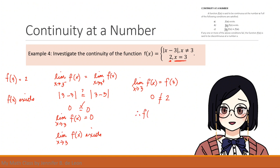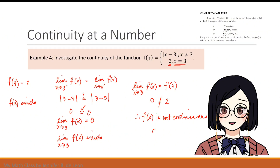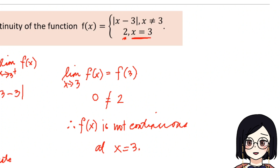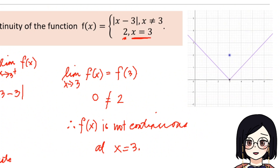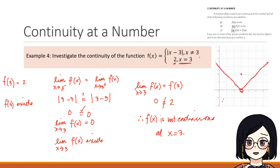We conclude that f(x) is not continuous at x = 3. We verify our answer by analyzing the graph. In the graph of |x - 3| where x ≠ 3, there is a hole at x = 3, so we have to lift our pen to trace each part of the graph. To trace the constant function, we again lift our pen. Therefore, f(x) is discontinuous at x = 3.